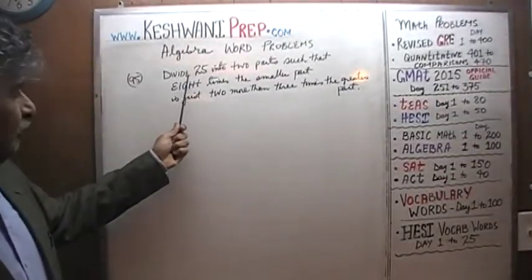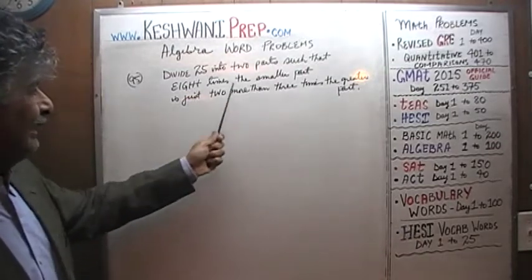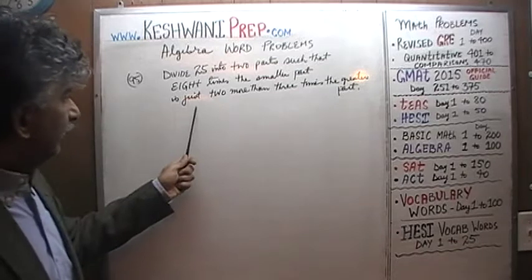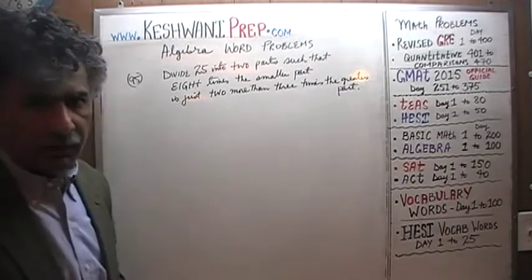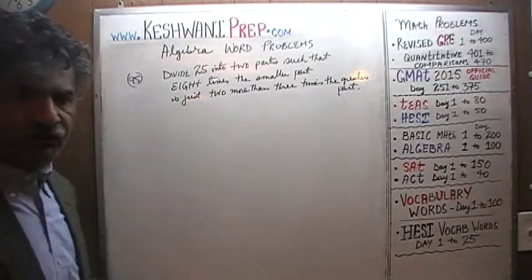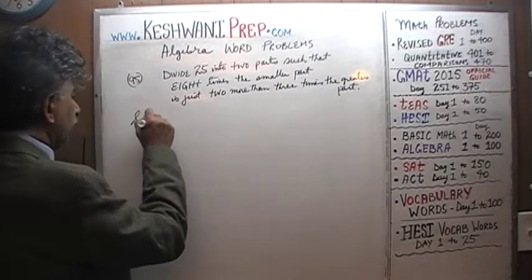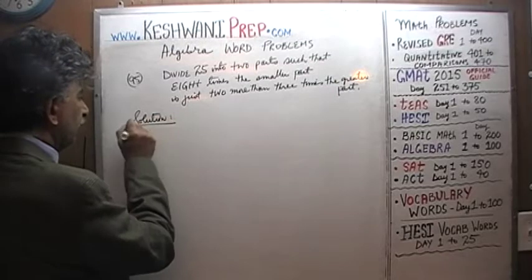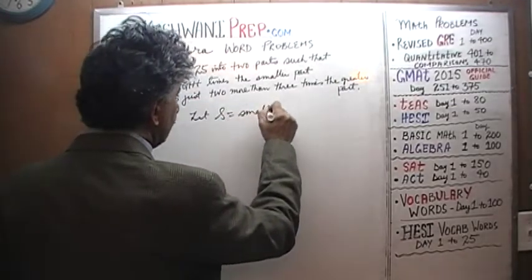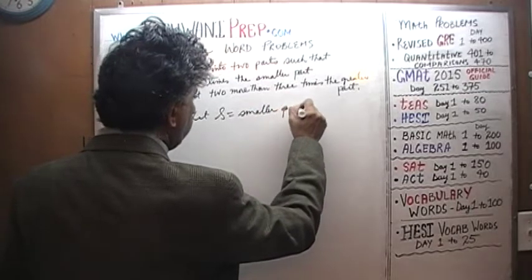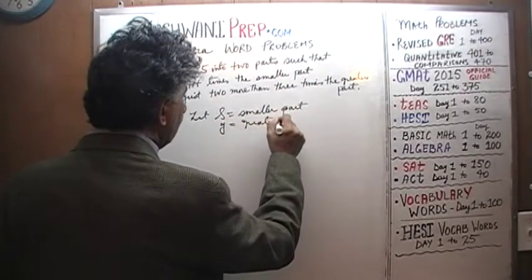We are asked to divide 25 into 2 parts such that 8 times the smaller part is just 2 more than 3 times the greater part. So let's begin. Let's first define our variables. Let S represent the smaller part and G would be the greater part.